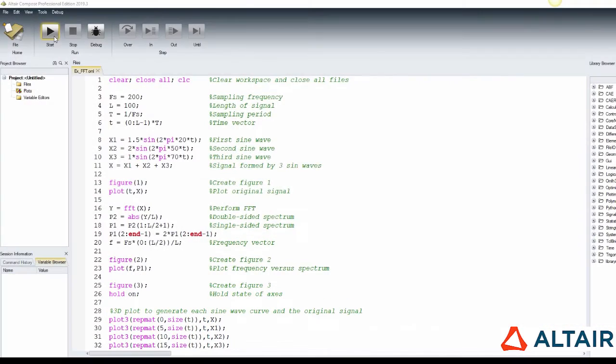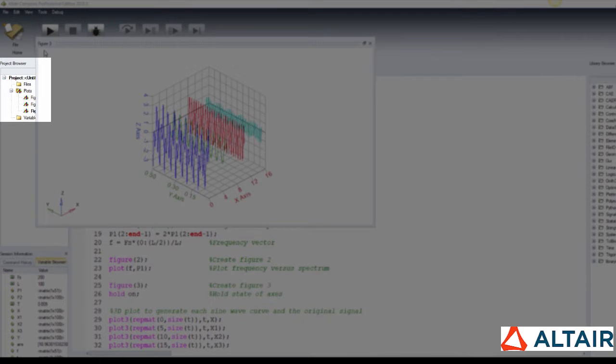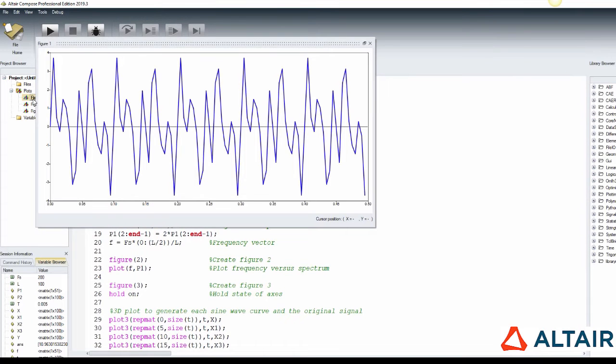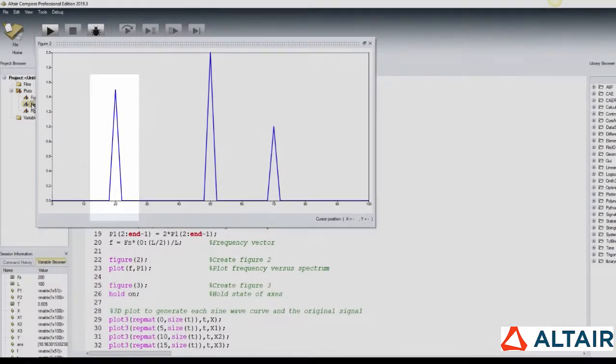When we run the script, 3 figures are generated and they are stored in the project browser. When we click on the first one, we can see the signal amplitude in time domain.